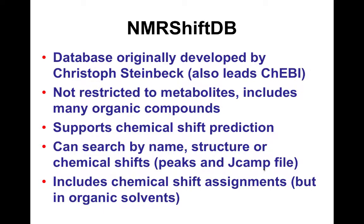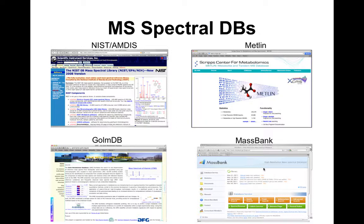Those are the NMR databases. If you used Baysel today or have used Chenomx, those also have their own spectral databases. Likewise, HMDB has a much larger NMR spectral database than most of the others, but it is more strictly a comprehensive metabolomic database, so I won't talk about it until later.